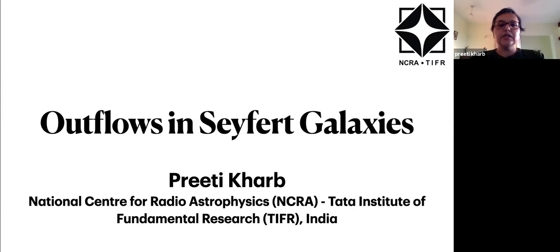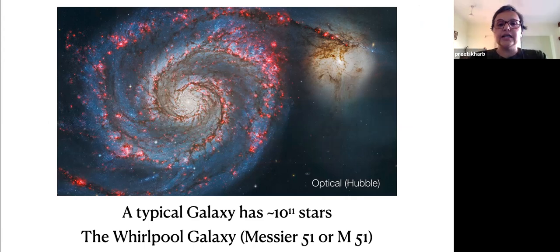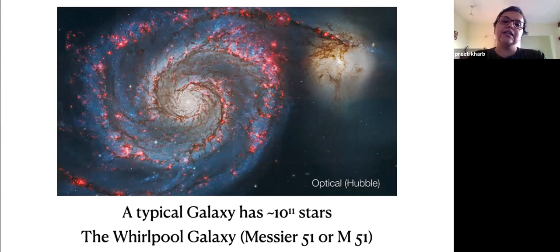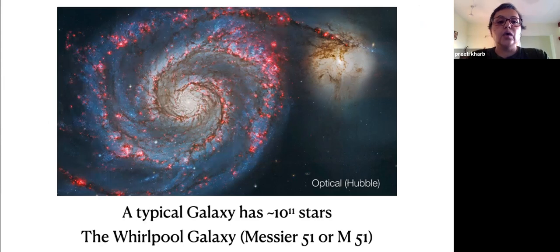Let me start with this beautiful picture of the Whirlpool Galaxy, also called Messier 51 or M51. This image is here to show that a galaxy is a collection of a huge number of stars — around 100 billion stars — and of course, gas and dust. But some galaxies are special.